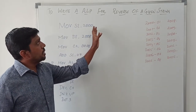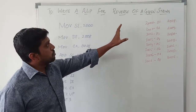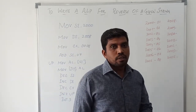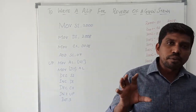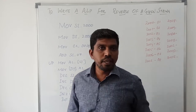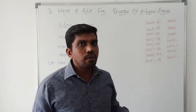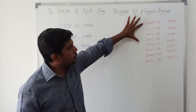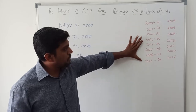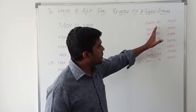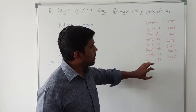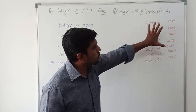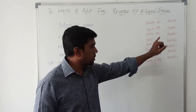It is related to transferring the data from source point to destination point in reverse order. You take the input values from the specified memory location. Here, I am taking 8 memory locations for storing the input value. The address location is 2000H to 2007H, storing 8 eight-bit values. After the execution of this program, the input value is transferred to the output memory location in reverse order.